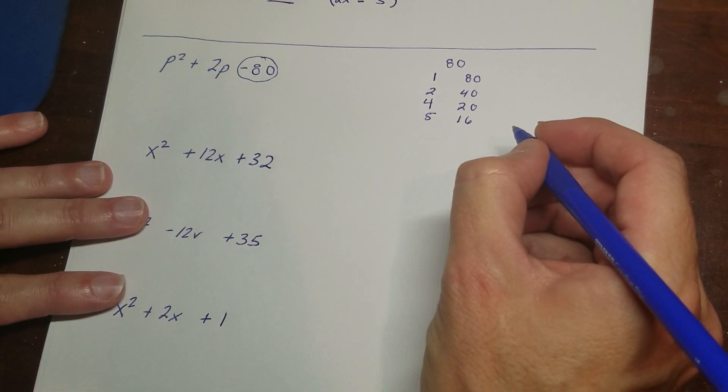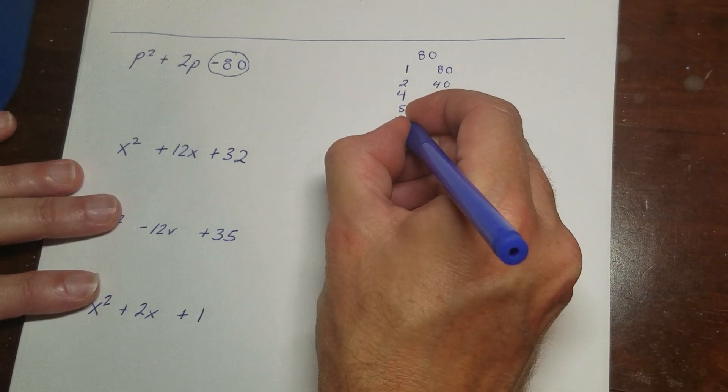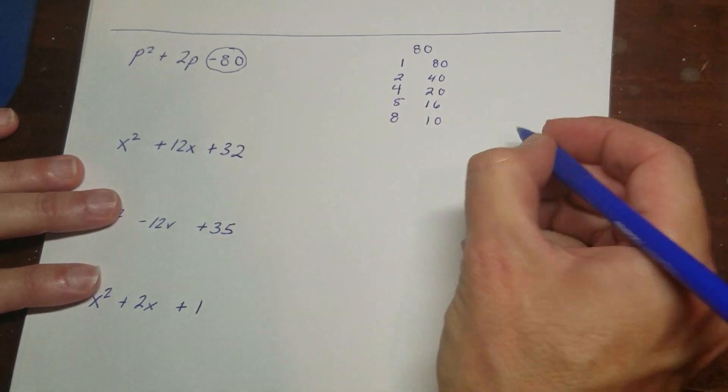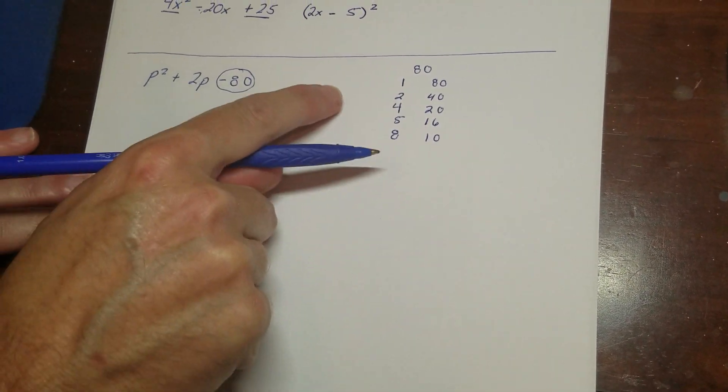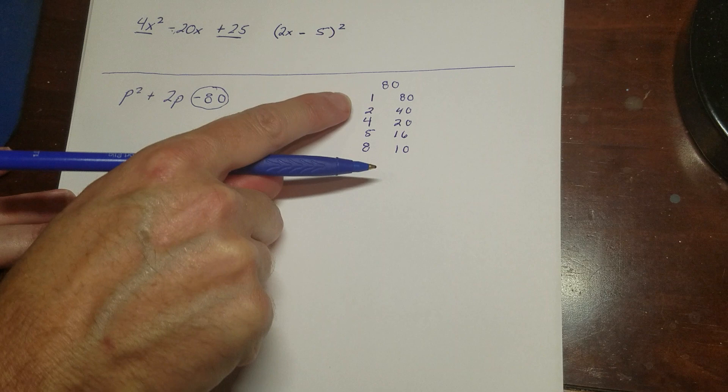6 doesn't go into 80. 7 doesn't go into 80. 8 goes into 80, 10 times. 9 doesn't. And the next number is 10, which I already have. So what happens is when you do it this way, you have all the factors, and they're all in order.